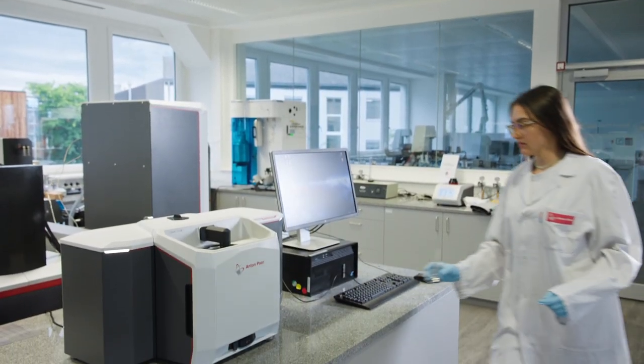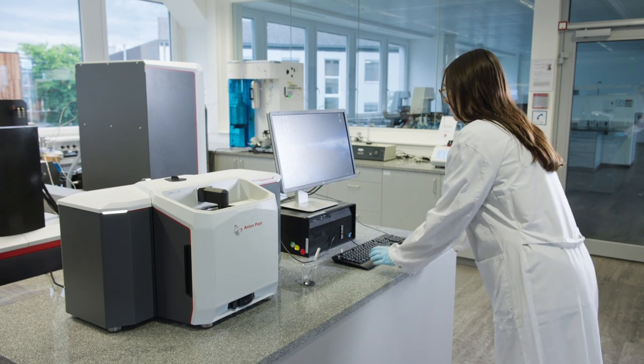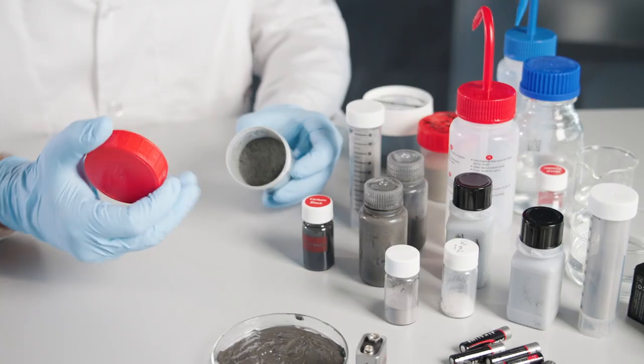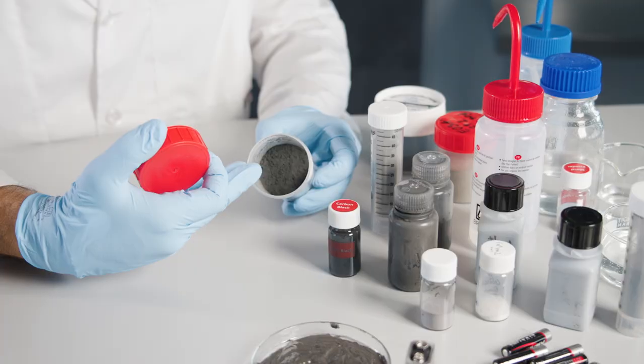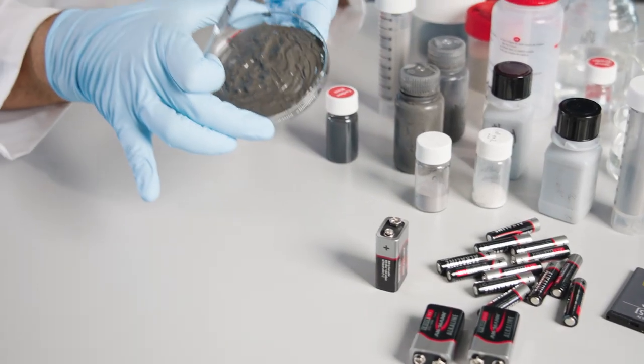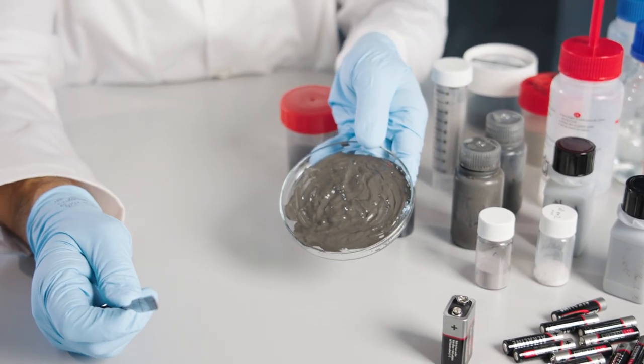Additional to particle size, the shape of particles would be very useful to determine. This characteristic will have an influence on parameters such as homogeneity of the battery slurry and the quality of the coating onto current collectors.